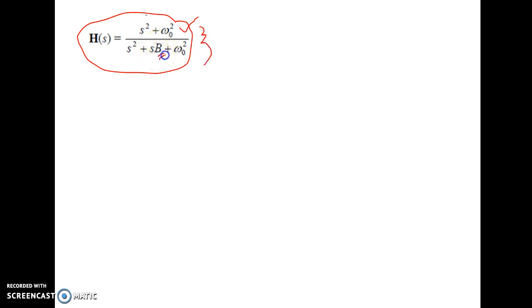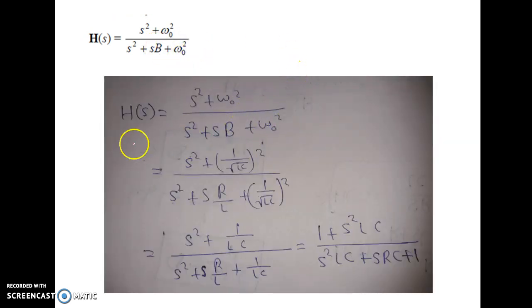So, what we will do in first step? We will substitute the bandwidth as R by L and omega naught by 1 by root over LC, and we will check what is the answer. So, H of S is the same thing I have written here. H of S equal to S squared plus omega naught squared by S squared plus S beta plus S B plus omega naught squared. Now, instead of omega naught, we will substitute 1 by root over LC, which is the resonant frequency, and instead of bandwidth we will substitute R by L.